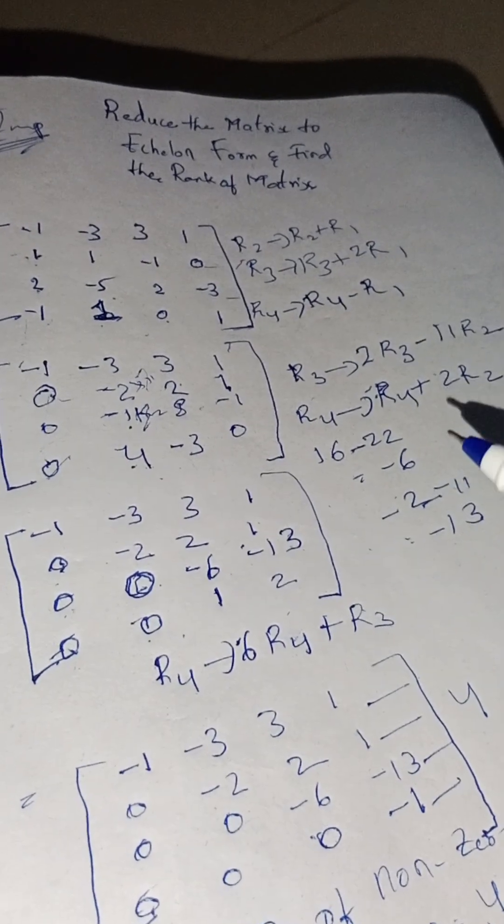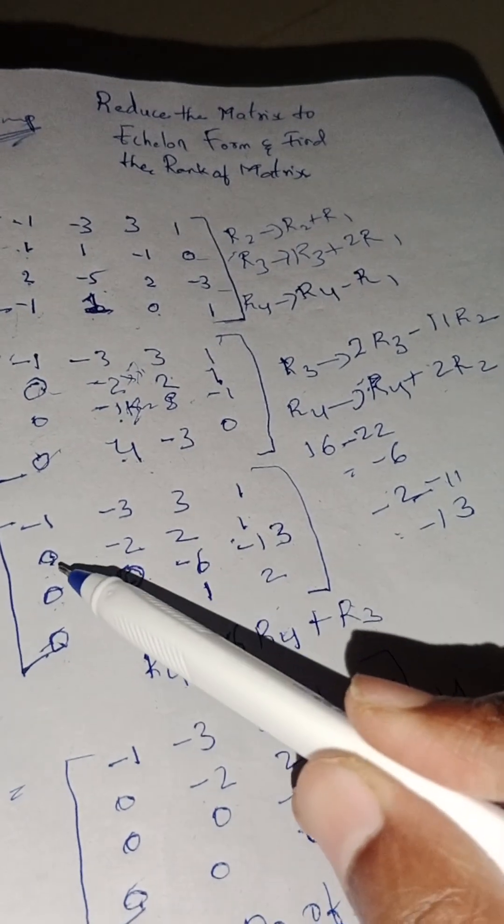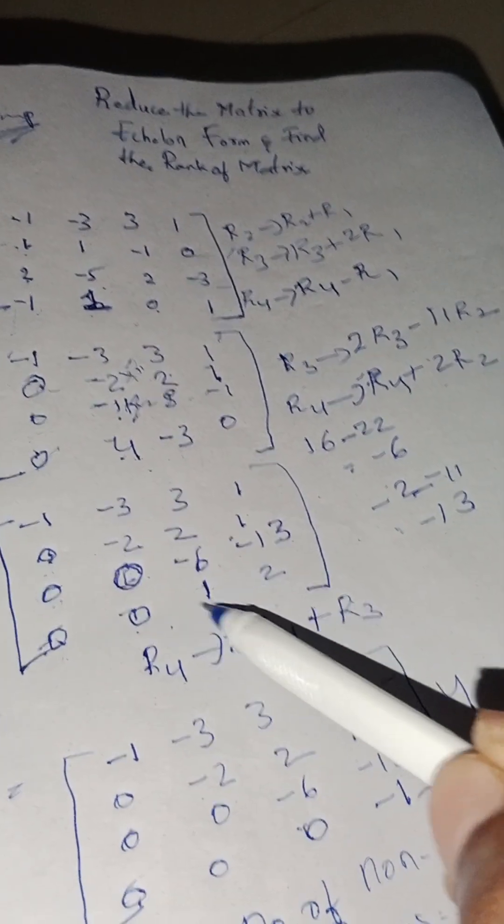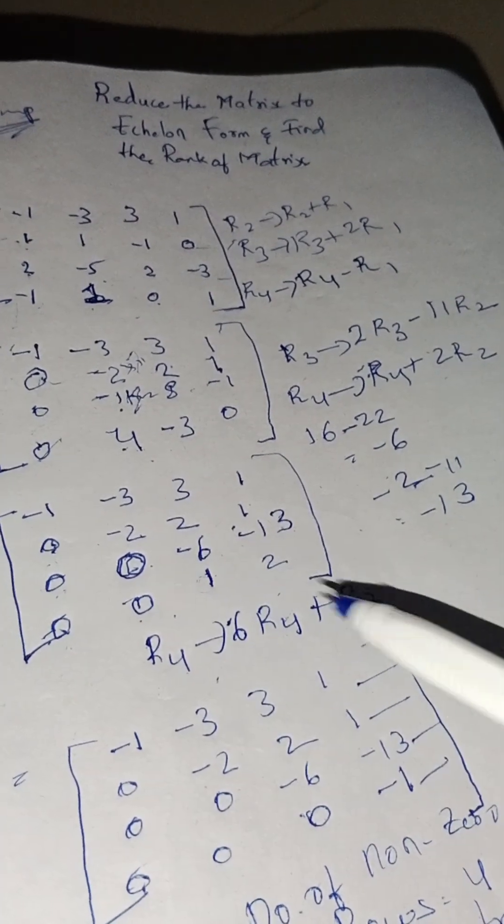As we already know, echelon form means we have to get the lower triangular zeros, right? So we got zeros here, now we have to get 0 here. So we have to apply transformation for row 4 using R3.